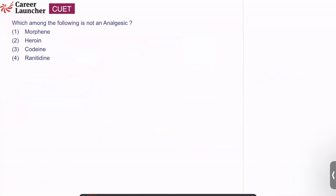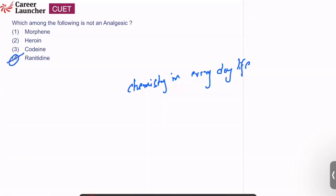Question number 9: which among the following is not an analgesic — from chemistry in everyday life, memory-based. The options are morphine, heroin, codeine, and ranitidine. The answer is ranitidine; all the remaining ones act on the nerves as analgesics. Answer is option 4.